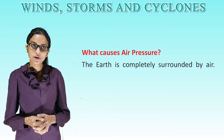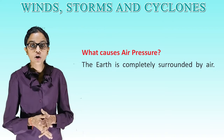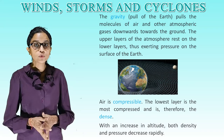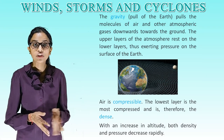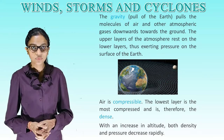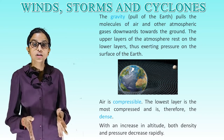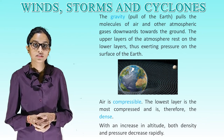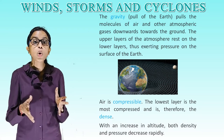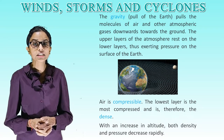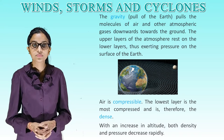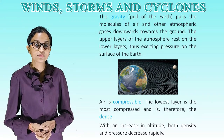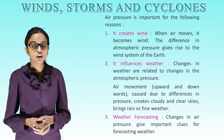What causes air pressure? The earth is completely surrounded by air. The gravity of the earth pulls the molecules of air and other atmospheric gases downwards towards the ground. The upper layers of the atmosphere rest on the lower layers, thus exerting pressure on the surface of the earth. Air is compressible. The lowest layer is the most compressed and therefore the most dense. With an increase in altitude, both density and pressure decrease rapidly.